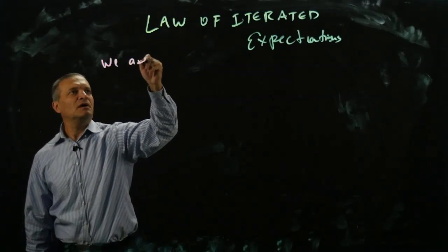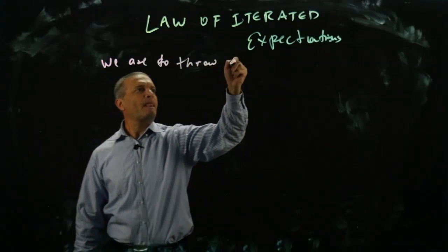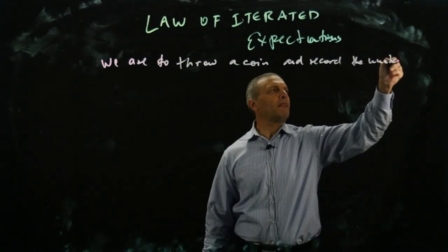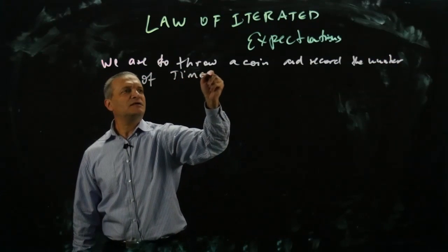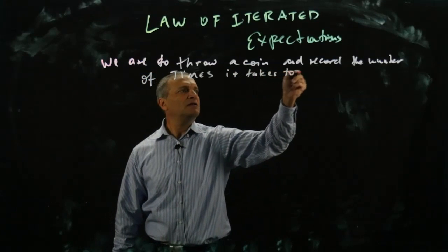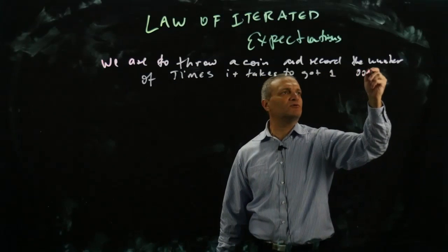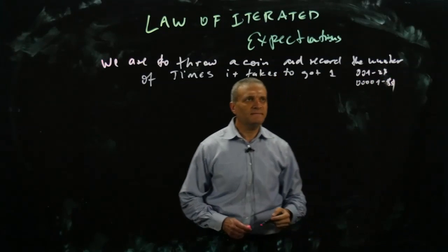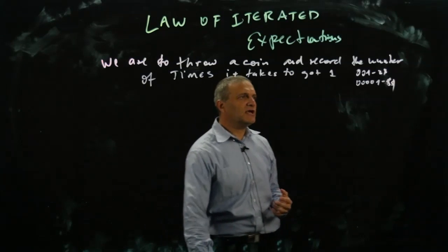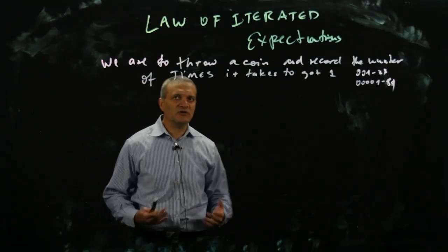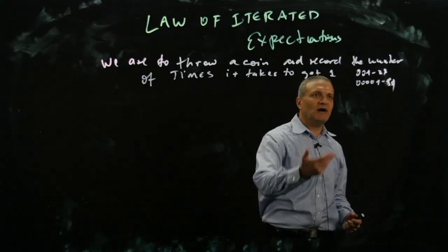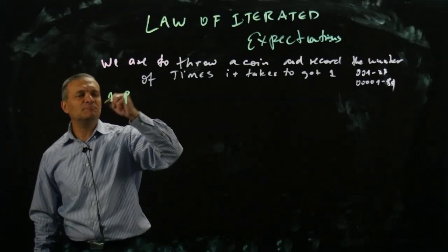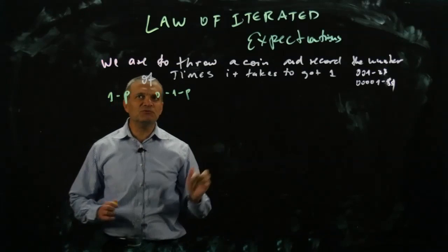We're going to play a game: we're going to throw a coin and record the number of times it takes to get a one. You are going to pay me that number of dollars. So if you get zero, zero, zero, one — that's three dollars. If you get zero, zero, zero, zero, zero, one — that's five dollars, and so on. The question is: what is the expected value of this game? We assume one comes up with probability p and zero with probability one minus p.